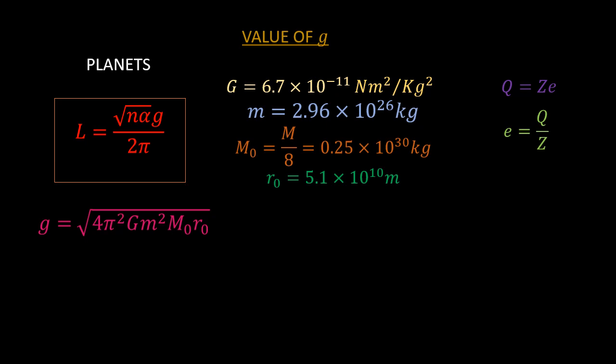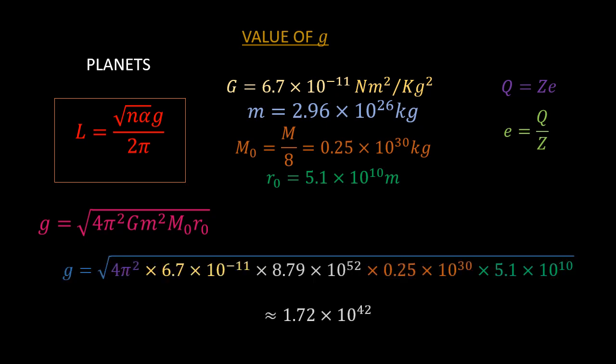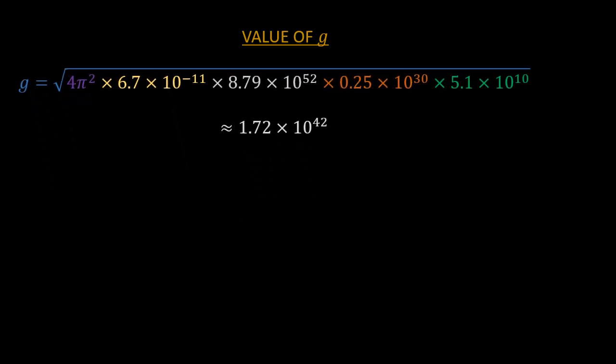Subbing in these values, we get 1.72 exponential 42. To get the units of G, we simply replace in the equation of the units of H, the Coulomb, with kilograms.